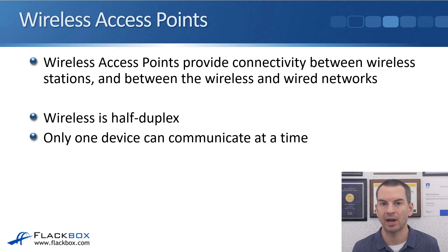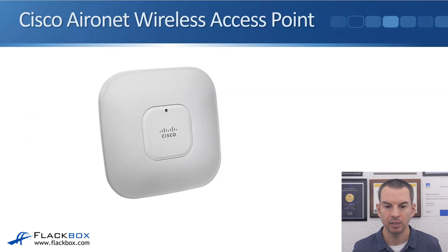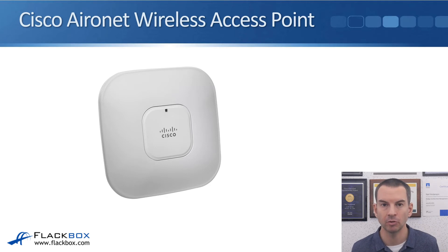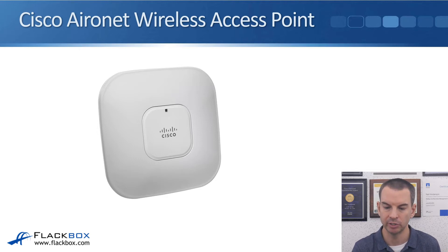Wireless is half duplex, meaning only one device can communicate at a time. So in that regard, your wireless access points operate similarly to hubs. Here's a picture of a typical wireless access point from Cisco. Your wireless APs can have either internal or external antennas. You can see the one here is internal, and they can also be designed for indoor or outdoor use.